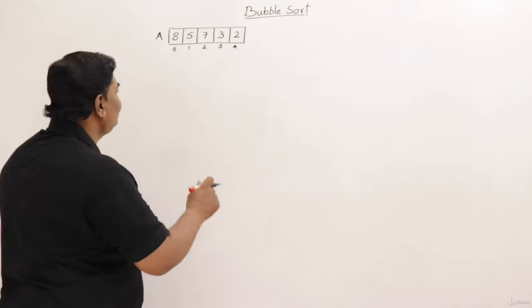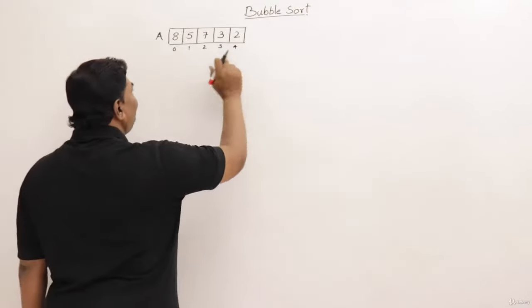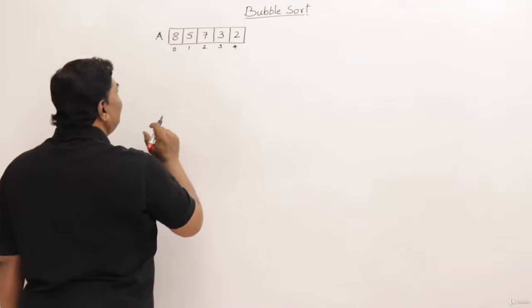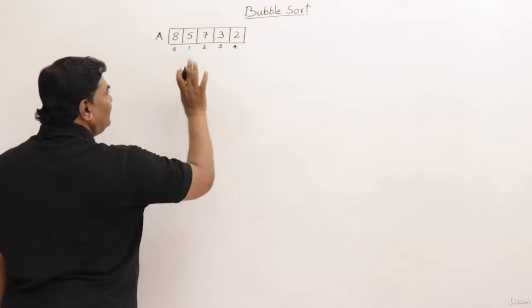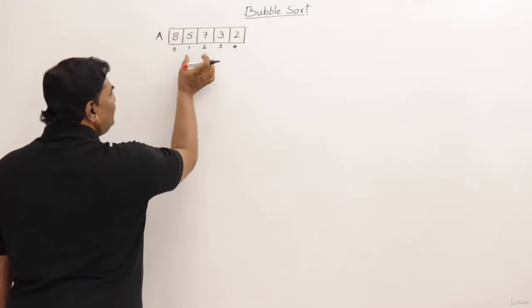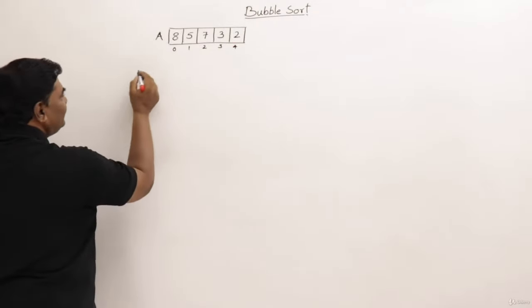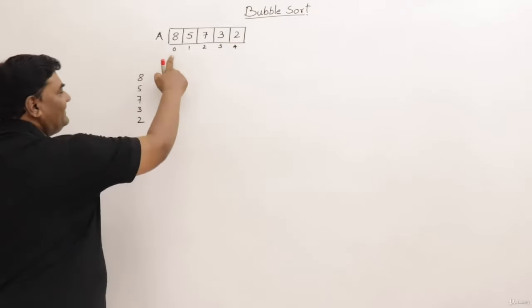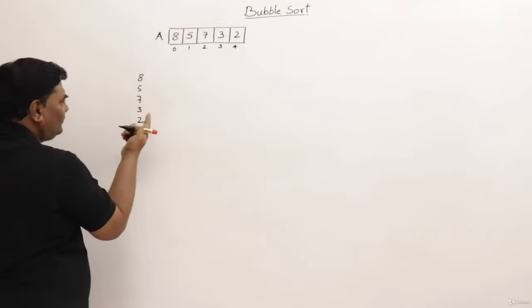I have a list of elements — an array of five elements. To understand how it works, I will draw this array vertically. The indices are 0, 1, 2, 3, 4.